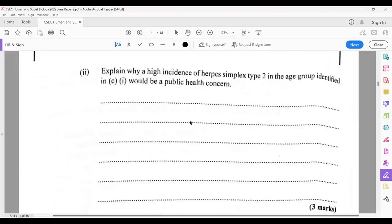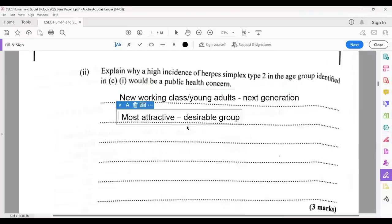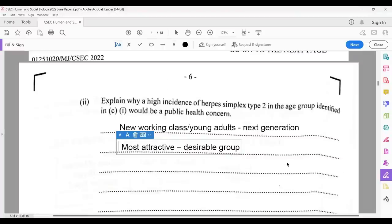Explain why a high incidence of herpes simplex type 2 in age group identified in C1 would be a public health concern. 18 to 25 is a really important class. It is the class of individuals or young adults that will be coming in as the working class, the next generation, the generation to take over. This is the age group that is most desirable, most attractive. They would be looking for spouses. So they are of great concern. If you have an outbreak in that age group, it means public health need to pay particular attention to that age group.